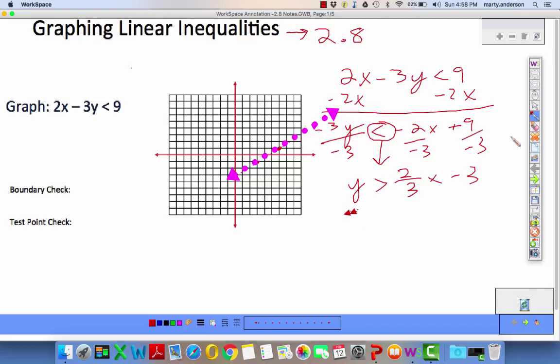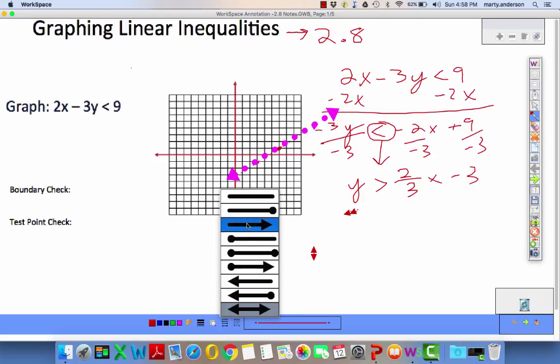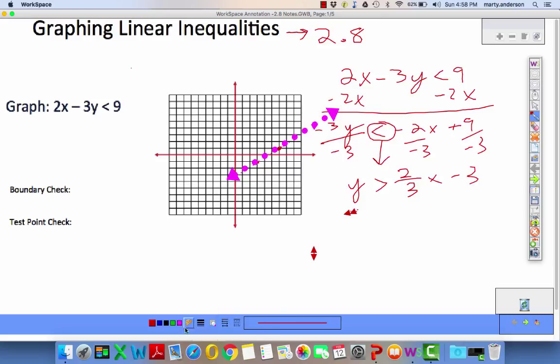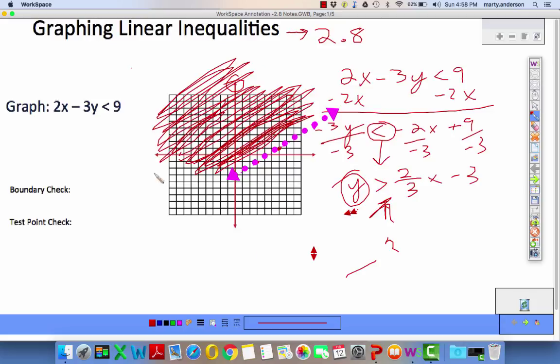I want to know where the y values are going to be greater than. I want my y values to be greater than, so you're reading it as y's are greater than. Where do the y values get bigger? The y values get bigger up here. I'm going to shade all of this. This is the set of all points that will satisfy the given equation.